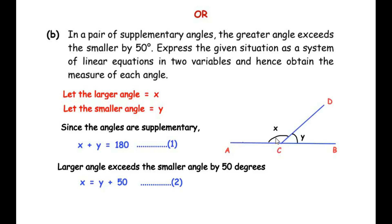Since the angles are supplementary, our first equation is x plus y equals 180 degrees. For the second equation, the greater angle exceeds the smaller by 50 degrees — 'exceeds' means bigger than, expressing addition. So x equals y plus 50. For example, if y is 30 degrees, then x is 80 degrees. This gives us equation 2: x equals y plus 50.